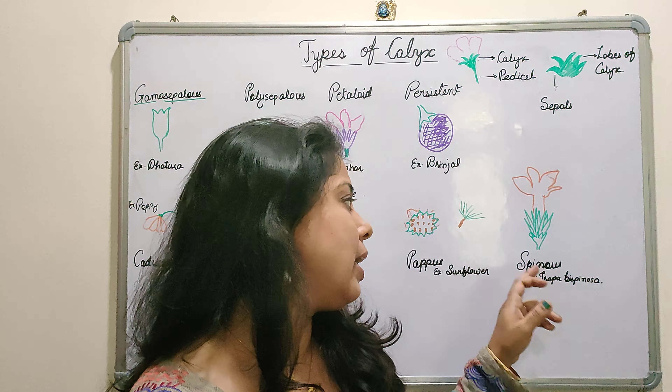The last type is Deciduous calyx. In this condition, just like the perianth in general, the calyx sheds off — but here it sheds a little differently, not as early. Once the flower gets bloomed, it shades off. Deciduous calyx is the condition which can be seen in mustard. This is the difference between persistent and deciduous calyx.